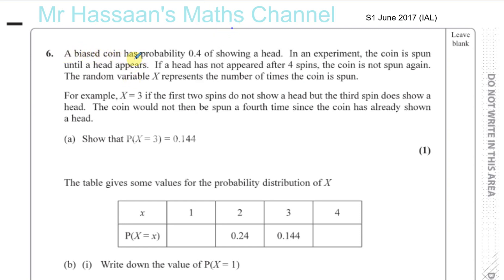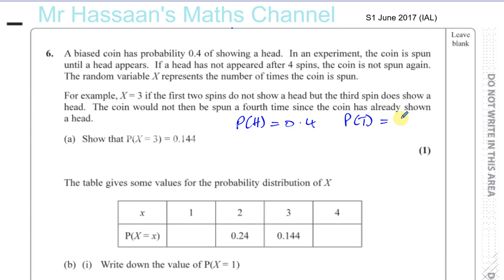A biased coin has a probability of 0.4 of showing a head. It's biased, so of course the probability of heads and tails are not the same. The probability of a head seems to be less than a tail, so the probability of a head is 0.4, which means the probability of getting a tail is going to be 0.6.